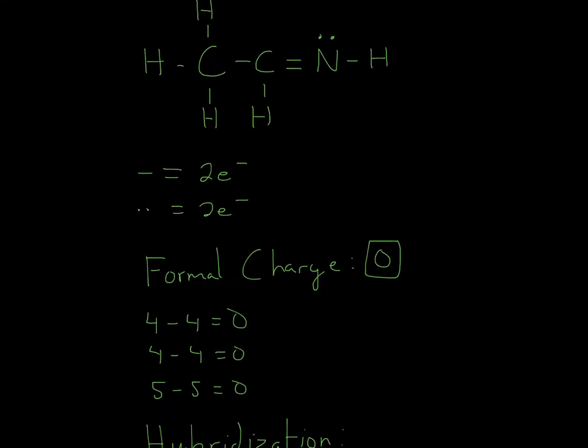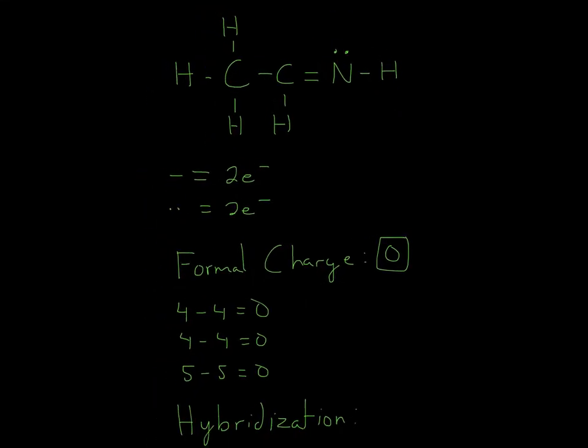So formal charge for the first carbon. So formal charge, you count a dash as 1. So you count 1, 2, 3, 4, 4 dashes. So 4 minus the group number carbon is in, which is 4. So 4 minus 4 is 0.